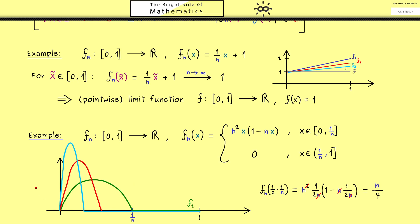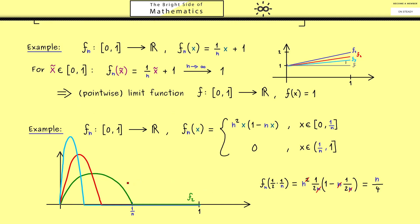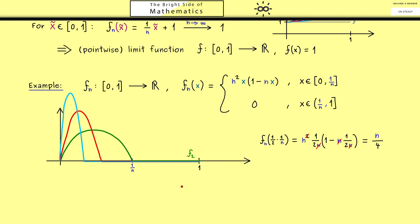You can imagine what happens when we continue increasing n. Of course now the question is, do we have a pointwise limit function? The answer is yes and you can also see it in the picture. Just fix a point x here and then you see at some point when n is large enough this value is at 0.